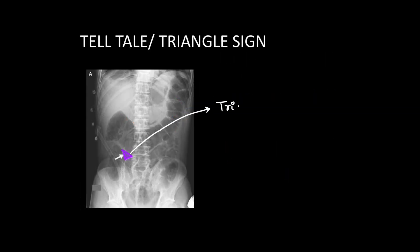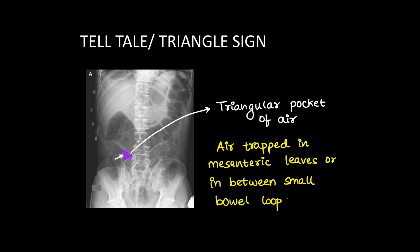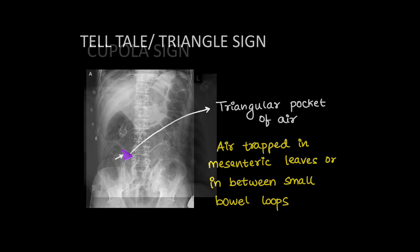Next we have the telltale sign or triangle sign. Here we can see a triangular pocket of air in between the small bowel loops. This is because the free air is trapped between the mesenteric leaves or between the small bowel loops, which appears like a triangle on erect x-ray.